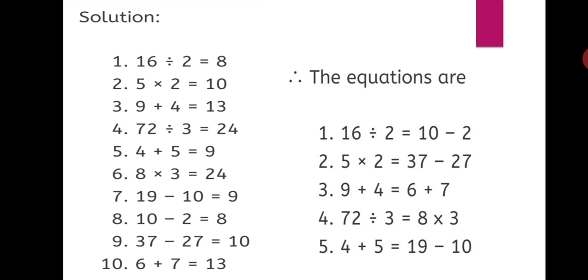72 ÷ 3 = 24, 4 + 5 = 9, 8 × 3 = 24, 19 - 10 = 9, 10 - 2 = 8, 37 - 27 = 10, 6 + 7 = 13. Here we have solved the operations. Now let us form the equations.